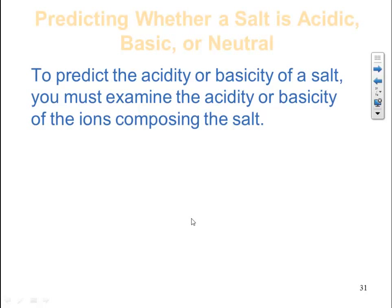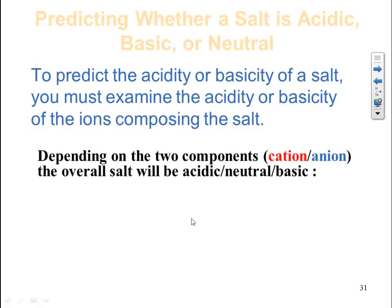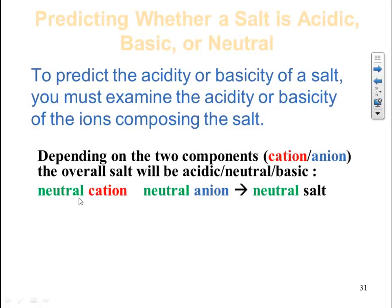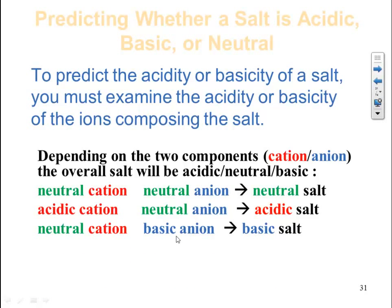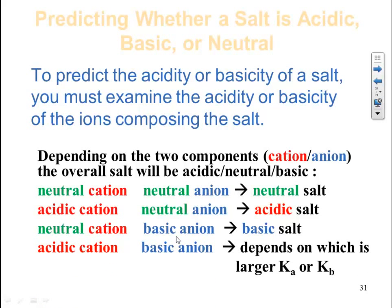To predict the acidity or basicity of a salt, examine the acidity and basicity of its ions. If you have a neutral cation and a neutral anion, the salt is neutral. An acidic cation with a neutral anion gives an acidic salt. A neutral cation with a basic anion gives a basic salt. If you have both an acidic cation and a basic anion, it depends on the larger Ka or Kb — whichever ionization constant is larger determines whether more hydronium or hydroxide is formed, making the salt acidic or basic accordingly.